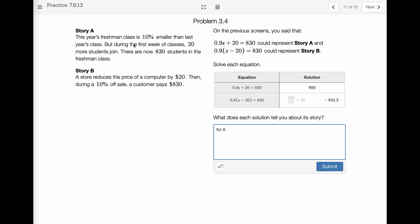What did each solution tell you about the story? For A, this freshman class is 10%, so now there are 830 students. So we calculate, we went back in time. First, we took out the 20 students that just joined and then this class compared to last year. So this is last year's class. For A, there were 900 students in last year's freshman class. For B, we're also going back in time. So first, we took away the sale, the most recent sale, then we added back the $20 from when it was sold back to full price. So for B, the full price of the computer is $942.20.